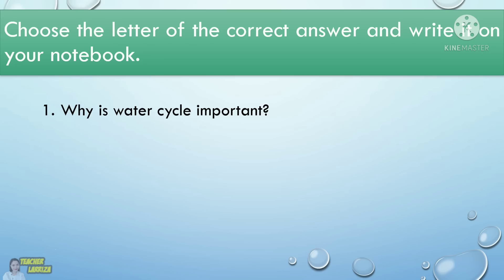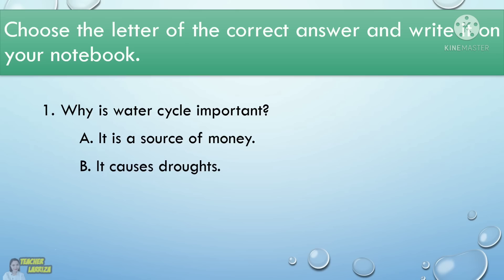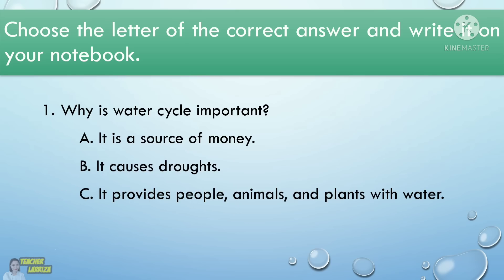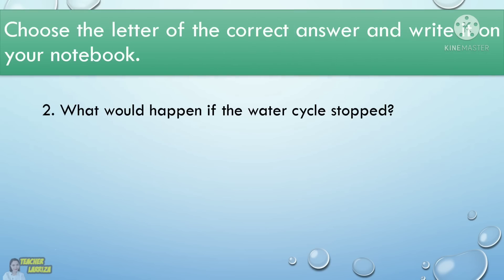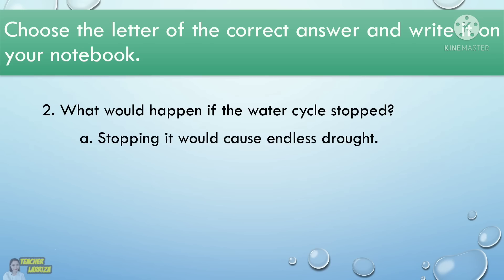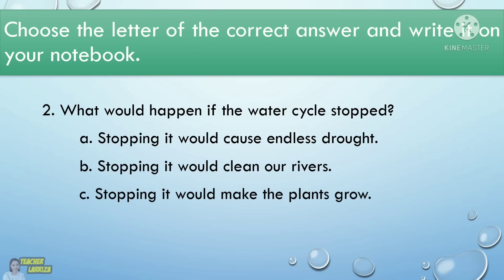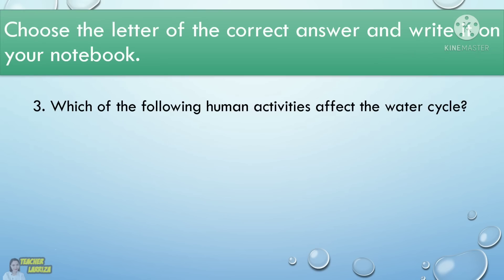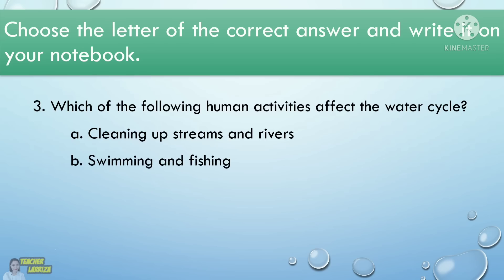For our next activity, choose the letter of the correct answer and write it in your notebook. 1. Why is water cycle important? A. It is a source of money. B. It causes droughts. C. It provides people, animals, and plants with water. D. It is not useful to us. 2. What would happen if the water cycle stopped? A. Stopping it would cause endless drought. B. Stopping it would clean our rivers. C. Stopping it would make the plants grow. D. None of the above. 3. Which of the following human activities affects the water cycle? A. Cleaning up streams and rivers. B. Swimming and fishing. C. Damming rivers for hydroelectricity. D. Planting trees along river banks.